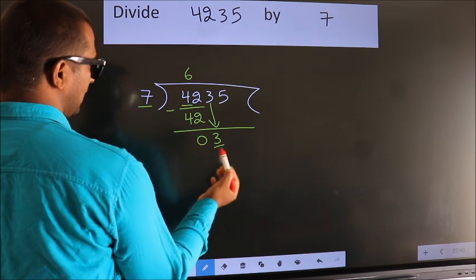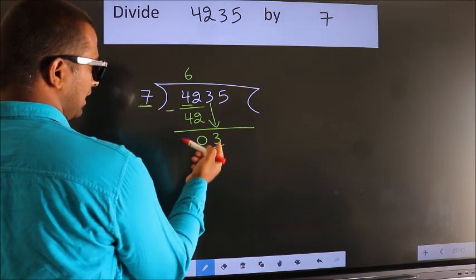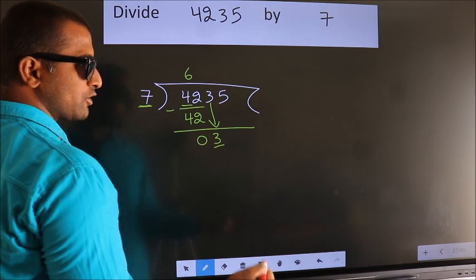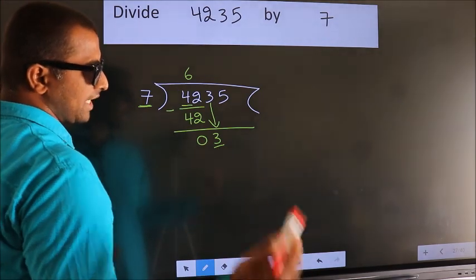Here we have 3. Here 7. 3 is smaller than 7, so we should bring down the second number.